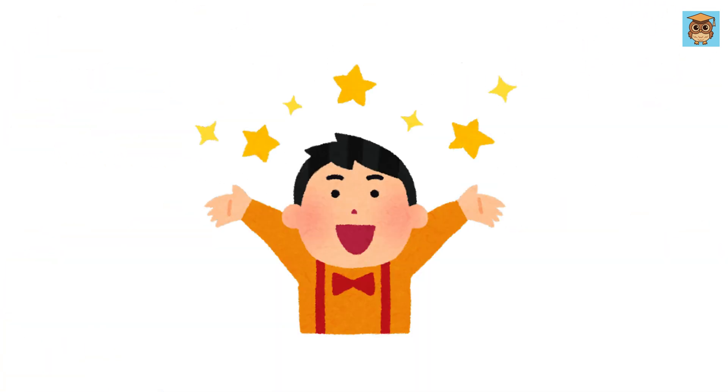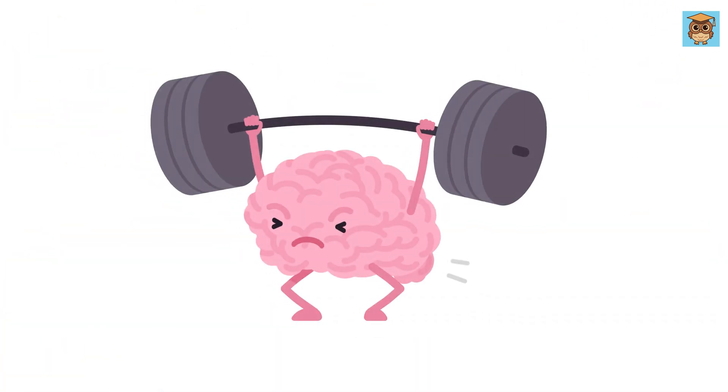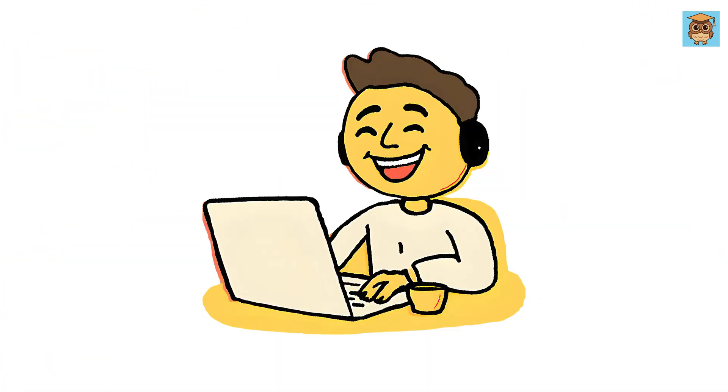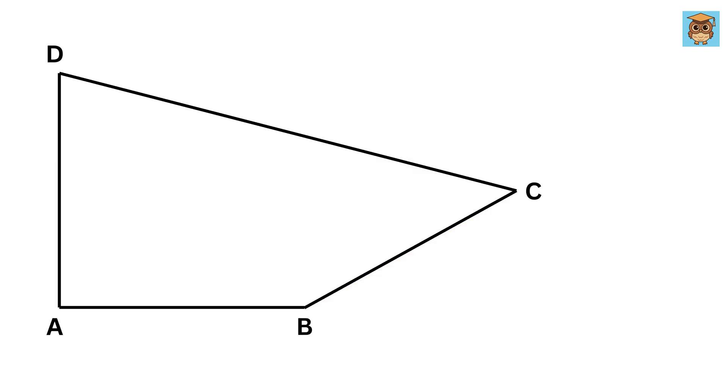This is another banger video where you will have to use your tiny brain cells in solving this tricky geometry problem. We have a quadrilateral ABCD where angle DAB is 90 degrees, angle ABC is 150 degrees, and angle ADC is labeled as X. We are also given that sides DA, AB, and BC are all equal to each other. Using only this much information, we need to find the value of X.